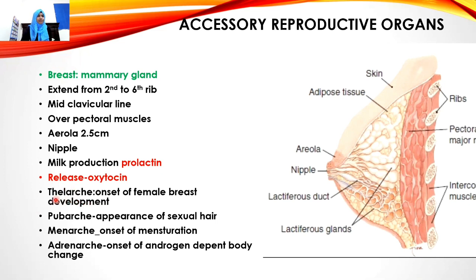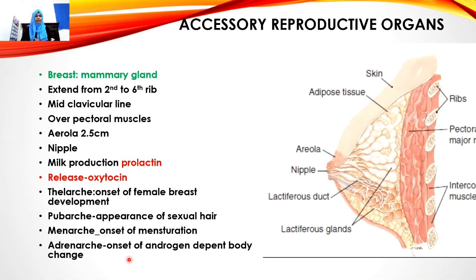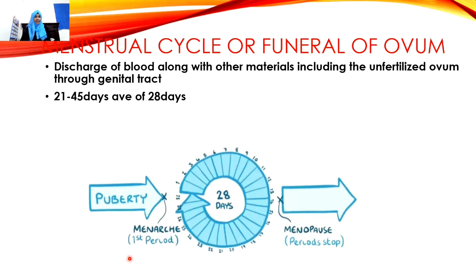Key terms: Thelarche is the onset of female breast development. Pubarche is the appearance of sexual hair. Menarche is the onset of menstruation, or the first period. Adrenarche is the onset of androgen-dependent body changes.